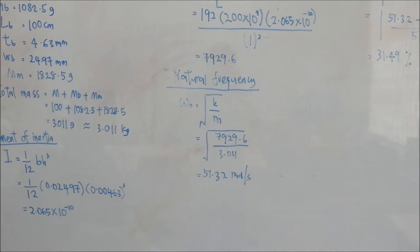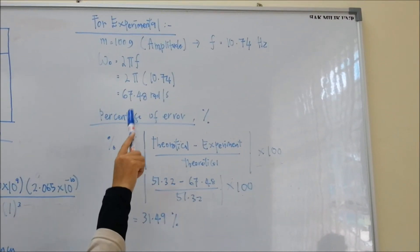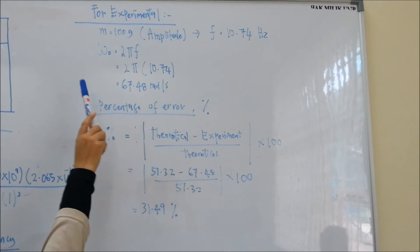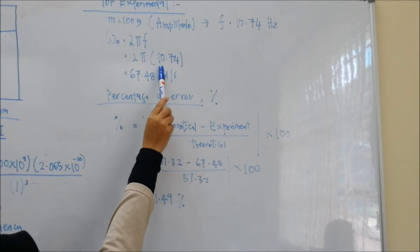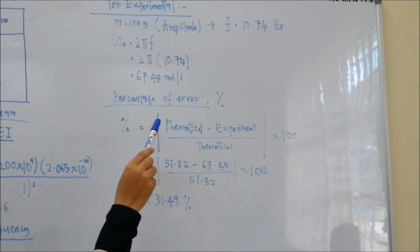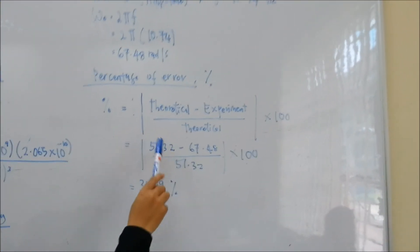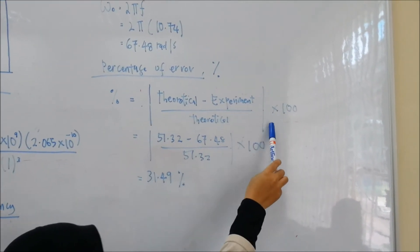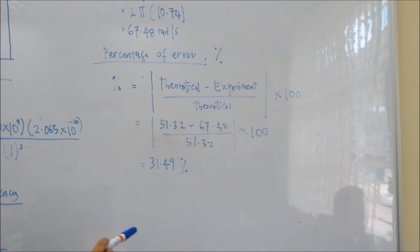Next, we move to the experimental value obtained from DESYLAB. For mass equal to 100g, we get frequency f = 10.74 Hz. We substitute into the formula ω₀ = 2πf, giving ω₀ = 2π × 10.74 = 67.48 rad/s. We then calculate the percentage of error using the formula: (theoretical − experimental) / theoretical × 100%, and we get a percentage of error of 31.49%.